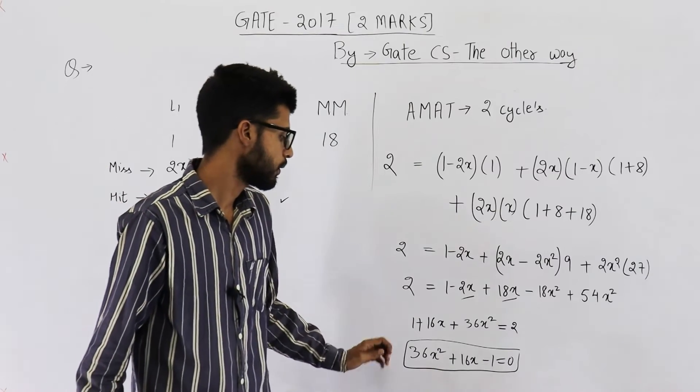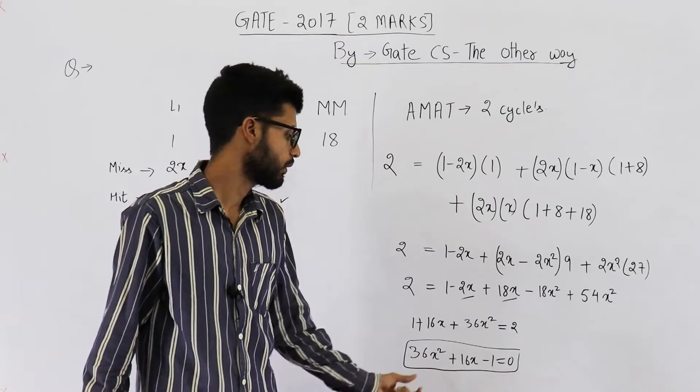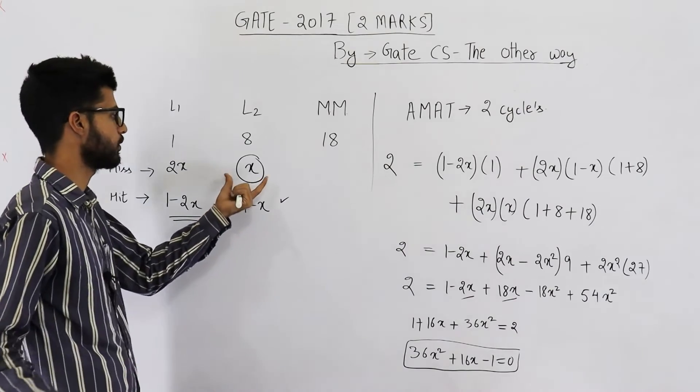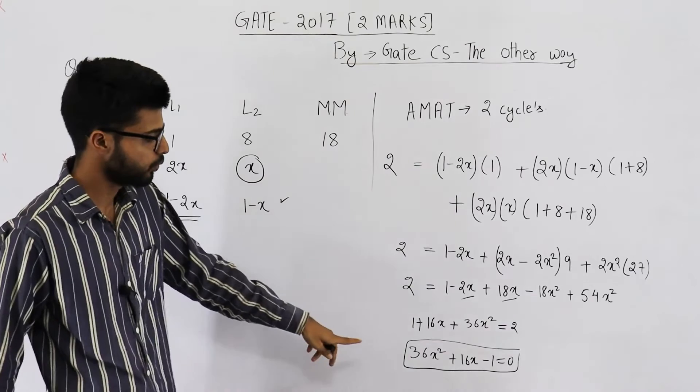So, this is the quadratic equation that you get. Now, you just solve this quadratic equation to get the value of x. X will be the miss rate of L2. Let me see what they are asking in the question. They are asking miss rate of L1 and L2. That means you require x and 2x. So, one of the roots of this equation will be positive. That root will be x. Also, you just take twice of x which will be 2x.